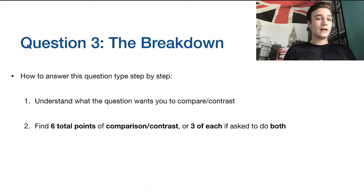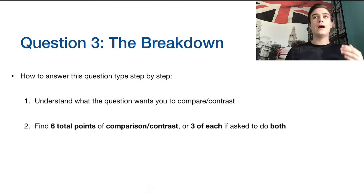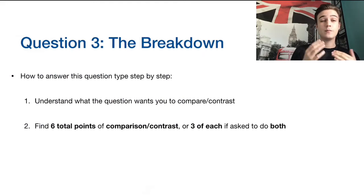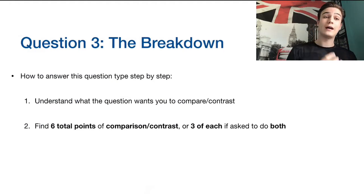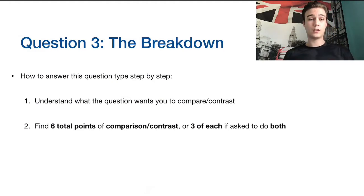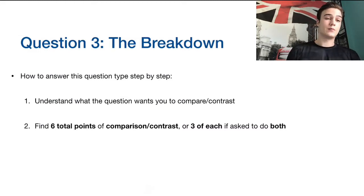Once you've understood what exactly you're going to compare and contrast, you need to find six total points of comparison and contrast. Here's a really important tip: pay close attention to whether the question says compare and contrast, or just compare, or just contrast. If you're asked to compare and contrast, you need three of each to score full marks. If you're asked to only compare or only contrast, you need six points of that one type to score six marks.